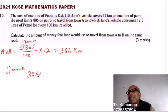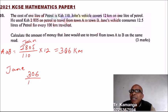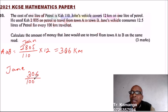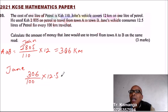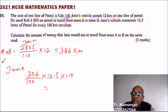Jane needs to cover 306 kilometers. Since the vehicle covers 100 km on 12.5 liters, you find how many times 100 fits into 306 — that is 3.06 — then multiply by 12.5 to get the total liters used, then multiply by the cost of petrol, which is 110 KES. So using your calculator: 3.06 multiplied by 12.5, then multiplied by 110.